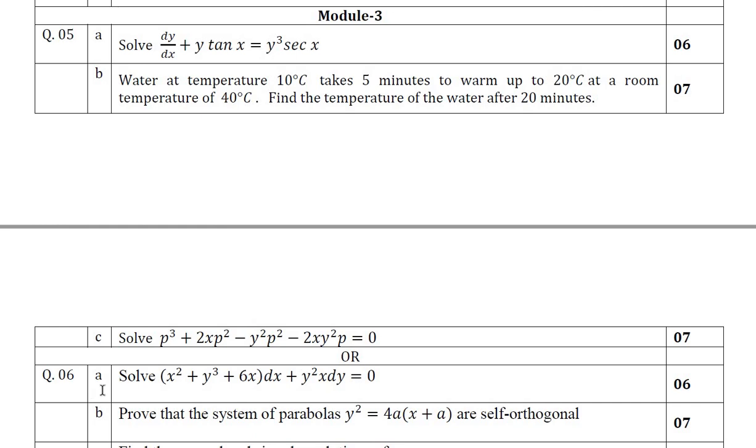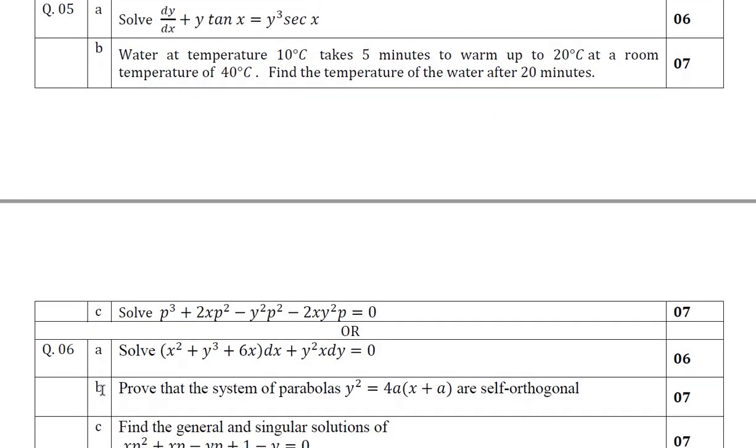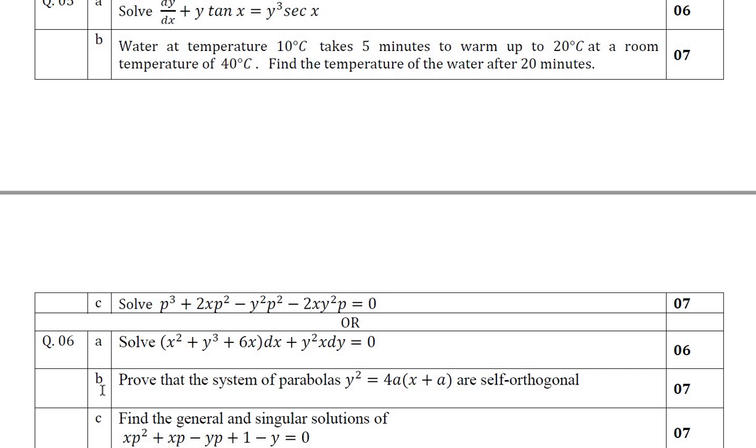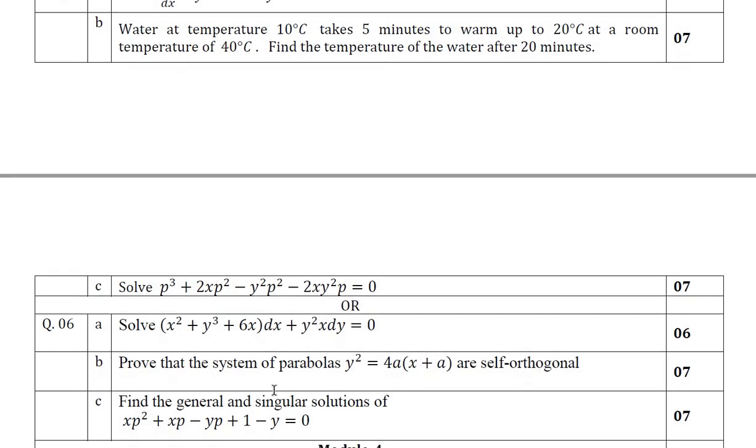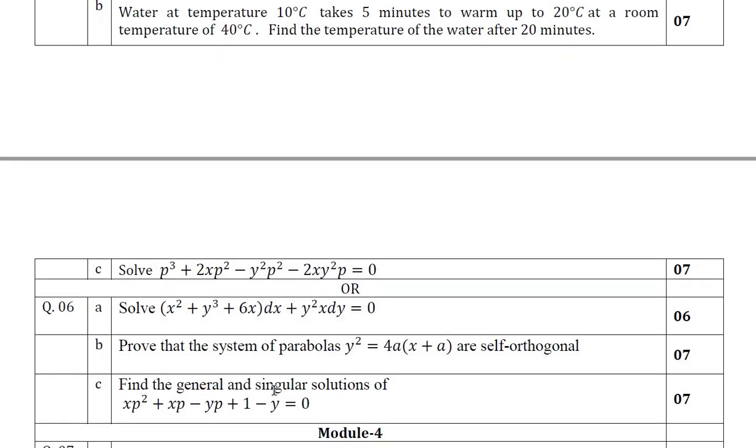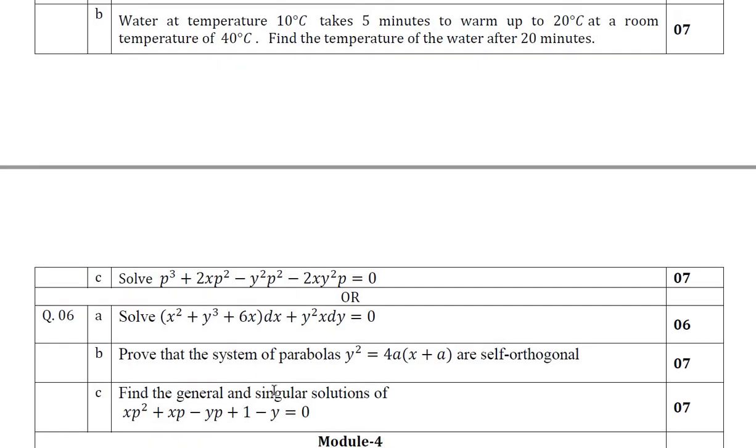Question number 6A will be as I told you that it may be a Bernoulli's again, a choice like this. You may get choice of Bernoulli's, solvable for P or exact reducible to exact. One of the questions will be there. Question number 6B has given orthogonal trajectory. Question number 6C has given singular, find the singular solution which is solvable for P. This is the way of asking module 3.